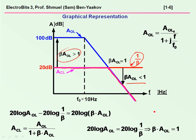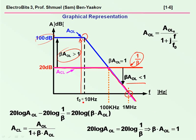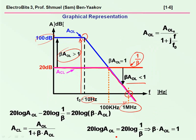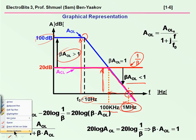We can use this presentation to get information about the breakpoint. Starting with the breakpoint from the open-loop gain: the gain here is 100 dB, which is 10 to the fifth, and the pole is at 10 hertz, so we multiply to get 1 megahertz. The gain for this private case is 20 dB — a factor of 10 — so the closed-loop bandwidth breakpoint will be 1 megahertz divided by 10, which is 100 kilohertz. By this graphical representation we can determine the actual A closed-loop magnitude as well as the 3 dB bandwidth point.